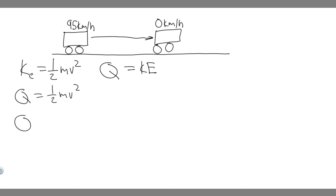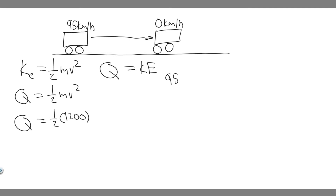So Q, measured in joules, is going to be equal to one half times the mass. In this case the mass of our car is going to be 1200 kilograms, so it's in kg so we can leave it — 1200 times the velocity. When you do this you need to make sure the velocity is in meters per second and not kilometers per hour, so let's go ahead and convert that.